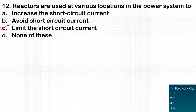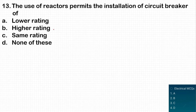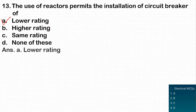The next question: the use of reactors permits the installation of circuit breakers of what type of rating? Since reactors limit the current during a fault, they help reduce the required rating of circuit breakers. So a lower rating is the answer, and option A is the correct answer.